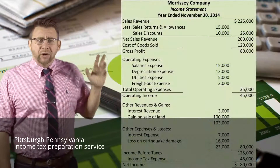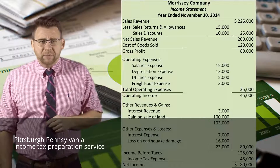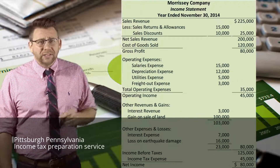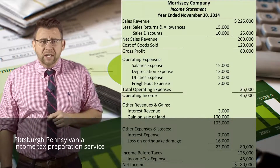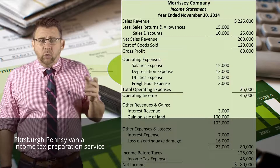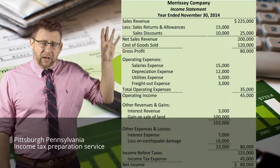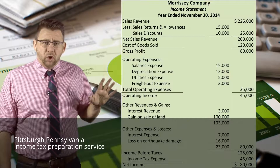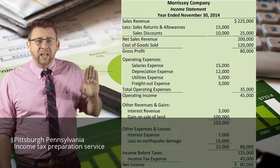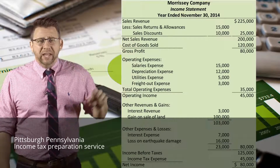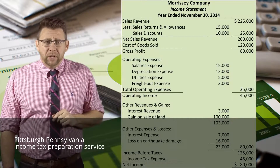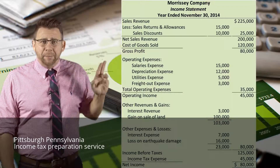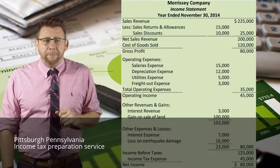Here is an example of the multi-step income statement. You can see the different subtotals listed. You will see items on an inner column being subtotaled and that amount carried to the outer column. Again, that does not mean debit or credit, so please remember that.